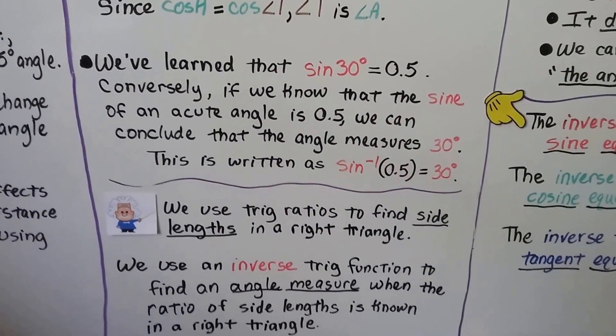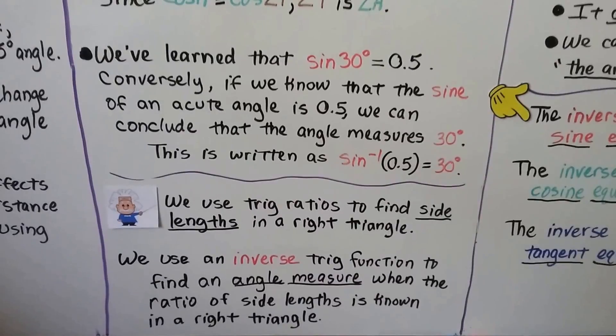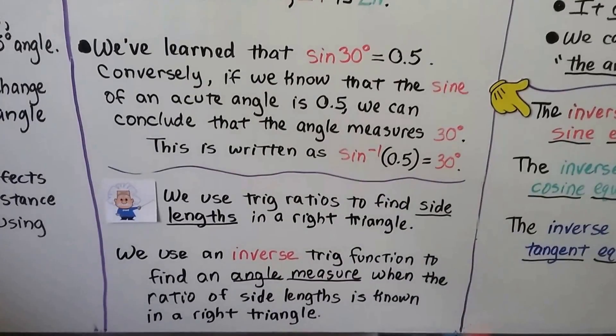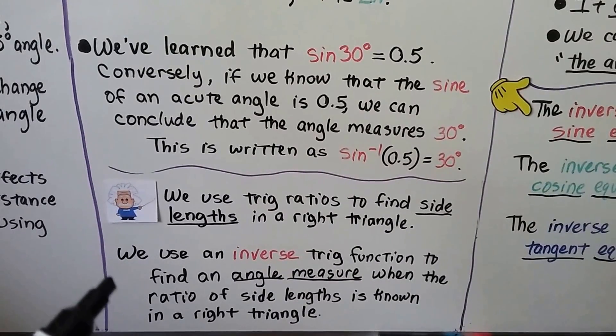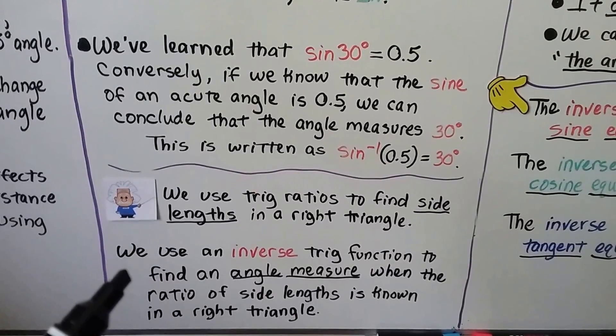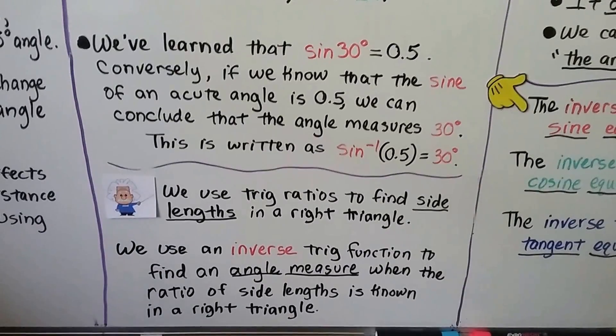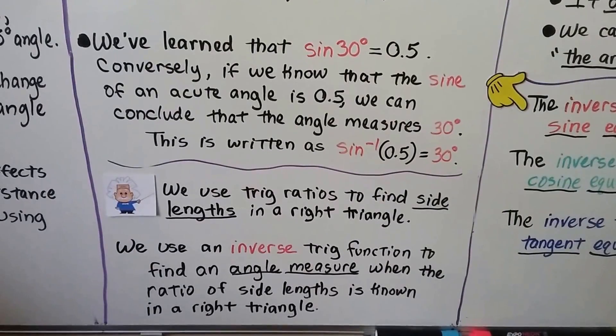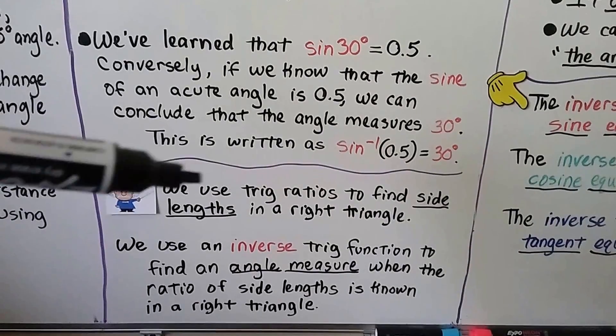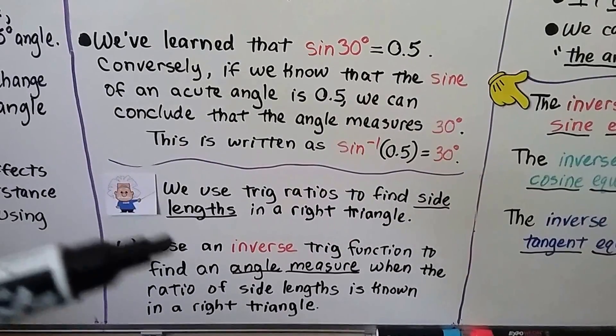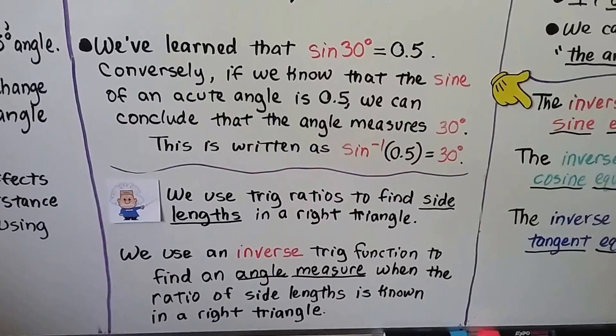We use trig ratios to find side lengths in a right triangle. We've done that in the previous videos. We use an inverse trig function to find an angle measure when the ratio of the side lengths is known in a right triangle. So the trig ratios are side lengths. The inverse trig functions are angle measures.